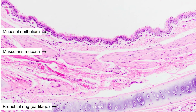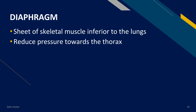The majority of the respiratory tree from the nasal cavity to the bronchi is lined by pseudostratified columnar ciliated epithelium. The bronchioles are lined by simple columnar to cuboidal epithelium, while the alveoli are lined with simple squamous epithelium for better gas exchange. A closer view of the bronchi shows the mucosal epithelium composed of pseudostratified columnar ciliated epithelium, a muscularis mucosa made up of smooth muscle, and bronchial rings made up of cartilage.